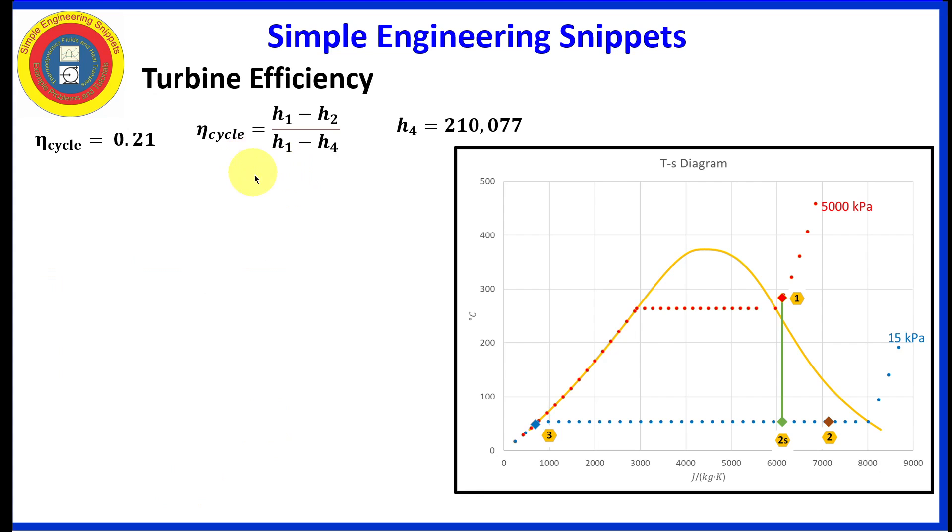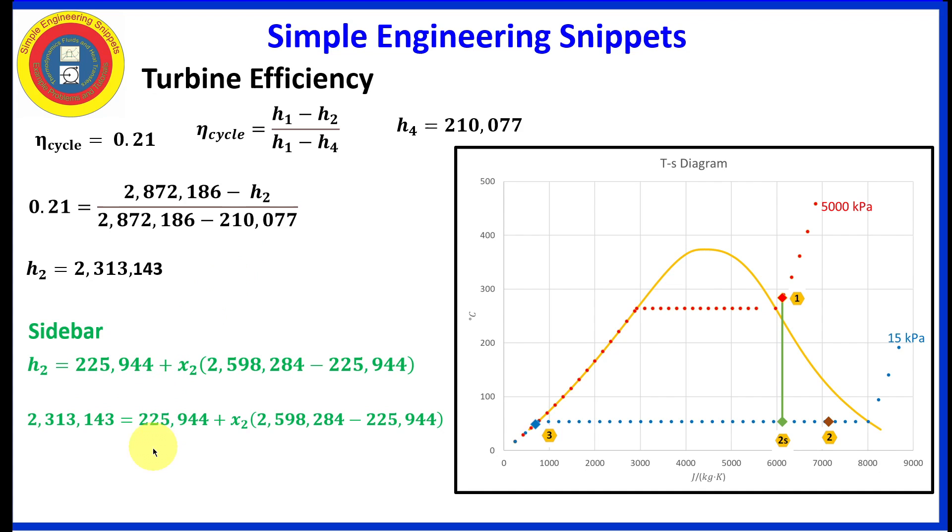So now returning to our equations, we have everything that we need except for H2. But it's one equation, one unknown. And so we can solve that for the enthalpy at two. Now we know all the enthalpies. But before we go back and calculate the turbine efficiency, let's conduct a sidebar. And since now we know the enthalpy at two, we can calculate the quality at two. And it comes out to be 0.88. The quality at 2S is 0.74. So in fact, point 2 is to the right of point 2S as we expected.